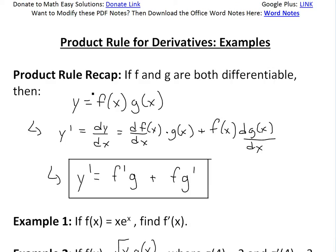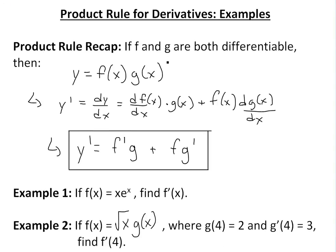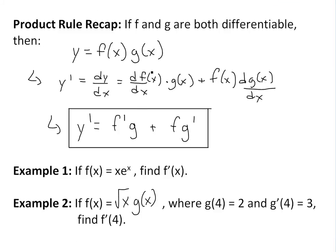To recap on the product rule — make sure to watch the video link below, I've done the proof on it. Basically, if f and g are differentiable, you'll have a function like y equals f of x times g of x. Differentiable means the derivative exists for both of them at whatever interval you're doing the derivative at.